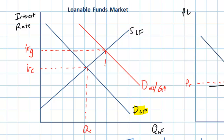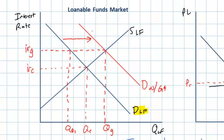Overall, there will be a greater quantity of funds available for overall spending in the economy — the quantity supplied increases due to the higher interest rates, and households will be willing to save more. But for private spending, the quantity demanded by households and firms for homes and capital investment will fall. Yes, overall demand for loanable funds increased, but the biggest chunk now consists of government demand. So while there is more overall spending, private spending has actually decreased from QE to QD1.